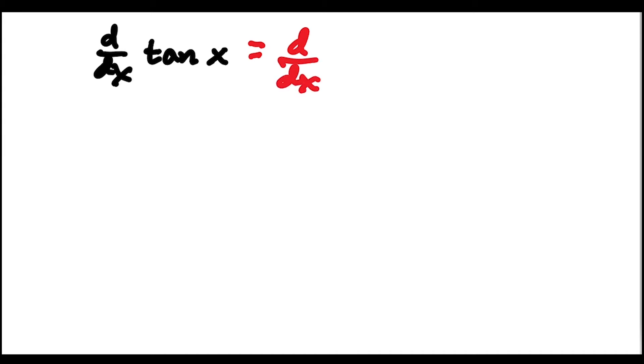So I'm going to do the derivative of sine x over cosine x, and then I'm going to use quotient rule to solve this.